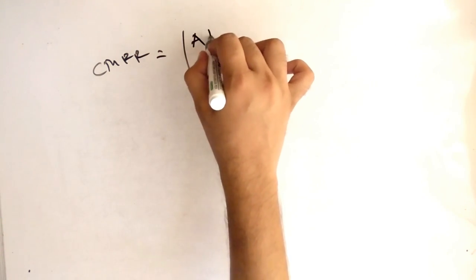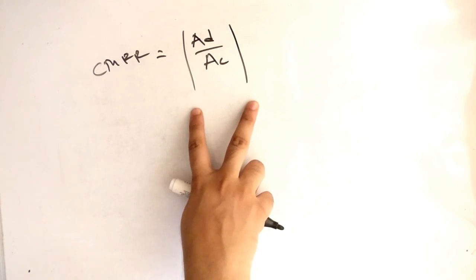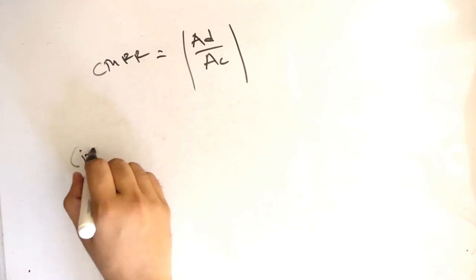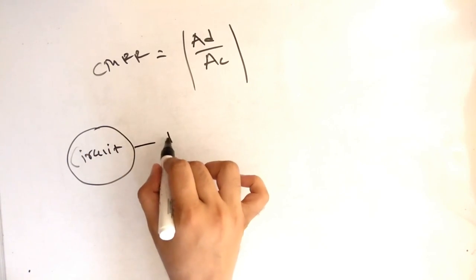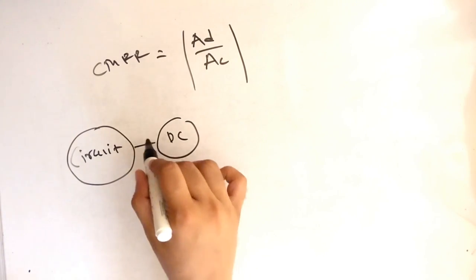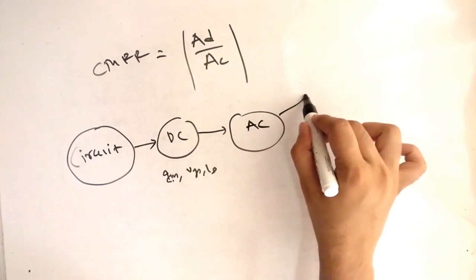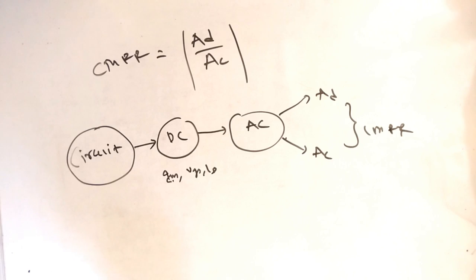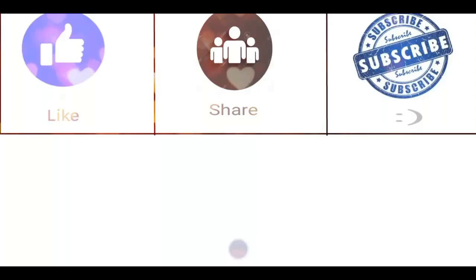The last term is CMRR, the common mode rejection ratio, equal to |AD/AC|. Note this is a magnitude, so the result is always positive. To recap: we studied the MOSFET differential amplifier circuit, performed DC analysis to find GM, VGS, and ID, then performed AC analysis to find differential gain AD and common mode gain AC, from which we can compute CMRR. If you found this helpful, please like, share with your friends, and subscribe to the YouTube channel.